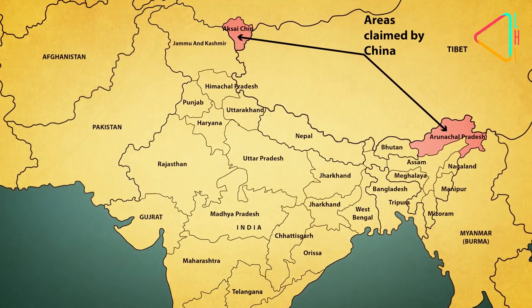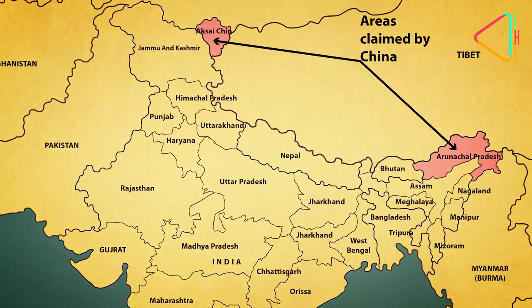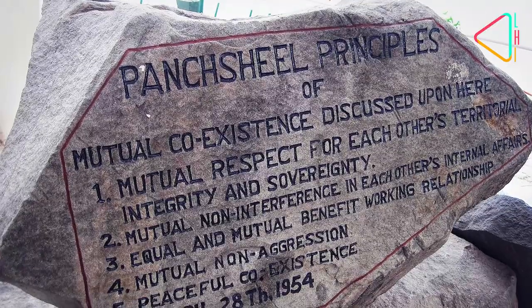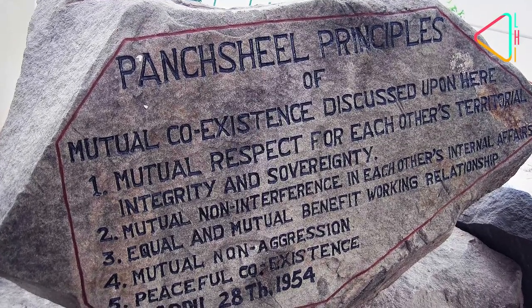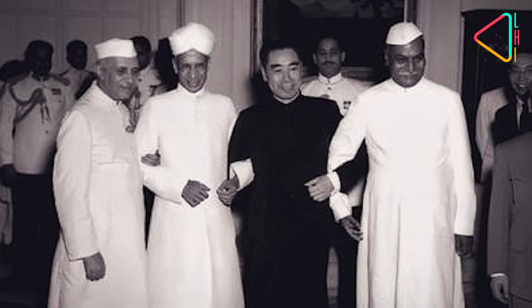But how did the two big neighbours who had been close through the 1950s come to this pass? In 1954, China and India had signed the famous Panchsheel Agreement based on the five principles of peaceful coexistence and non-interference. This is the famous photo of Chinese Premier Zhou Enlai with Indian Prime Minister Jawaharlal Nehru, President Dr. Rajendra Prasad and Vice-President Dr. Sarvepalli Radhakrishnan from the banquet at Rashtrapati Bhavan held in honour of Zhou in June 1954.